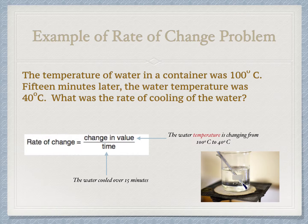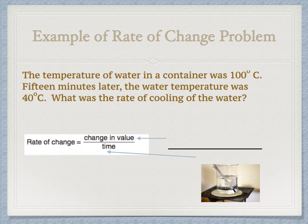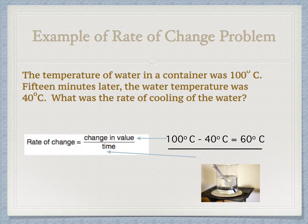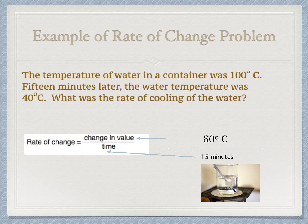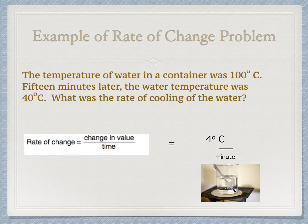First, identify those two values, then substitute in and calculate. For our change in value, we do the subtraction: 100 degrees minus 40 degrees Celsius gives us 60 degrees Celsius — that's how much the water cooled. We divide by 15 minutes. So 60 degrees Celsius divided by 15 minutes gives us 4 degrees Celsius per minute as our answer.